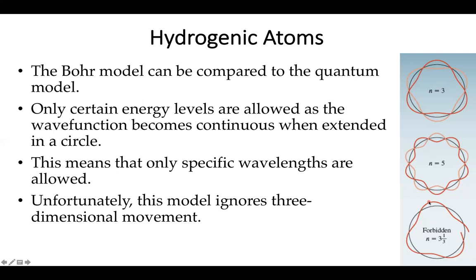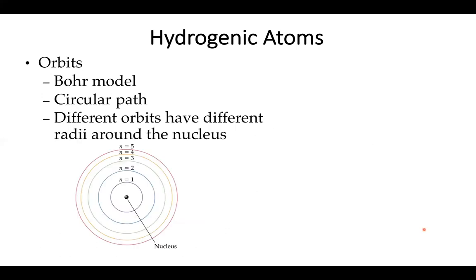However, this is the point at which the Bohr model starts to break down because it assumes we're moving in a circular path around a nucleus. It does ignore several key features: first is the three-dimensional movement, and second is the fuzziness when dealing with wave functions.